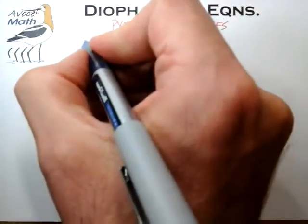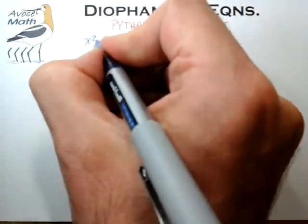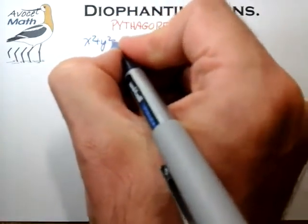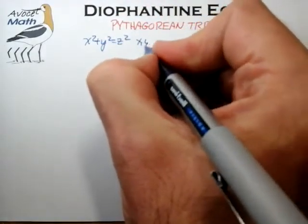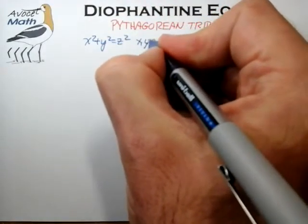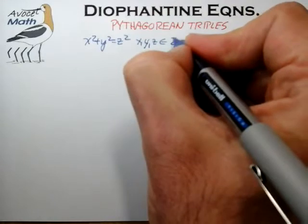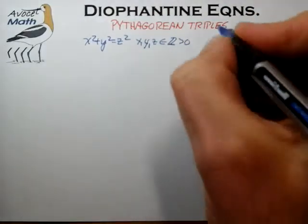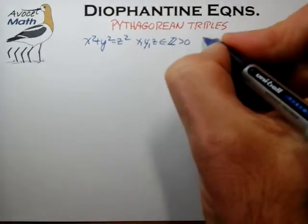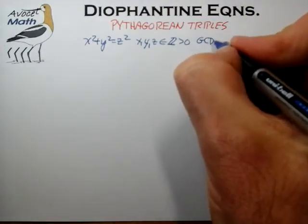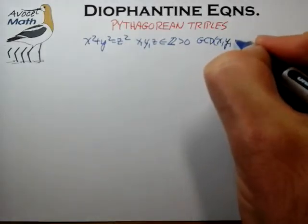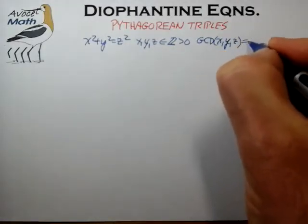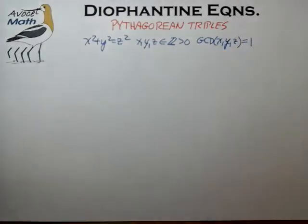Just to remind ourselves, we were solving the Pythagorean equation x squared plus y squared equals z squared, for x, y, and z in the set of positive integers. We're also looking for reduced Pythagorean triples — a set of three numbers that share no common factors, so their greatest common divisor is 1.